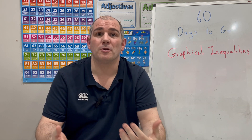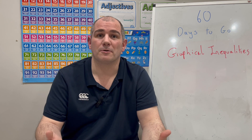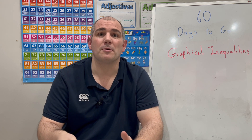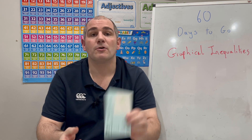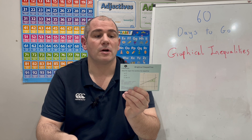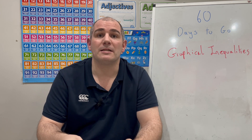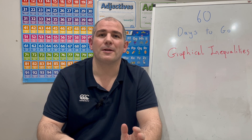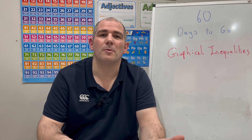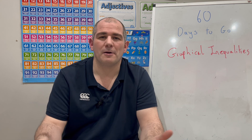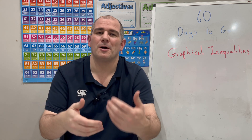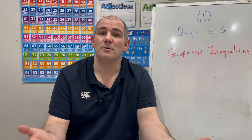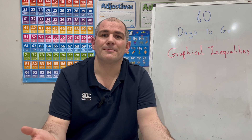Whenever we draw inequalities on graphs, we show the particular region that satisfies those inequalities. If you've got the Corbettmaths Revision card, it's card number 91 in the Higher Sets on graphical inequalities, so hopefully that'll be a useful one for you and help your study on this topic. In this video, we're going to go through graphical inequalities, so let's get started.